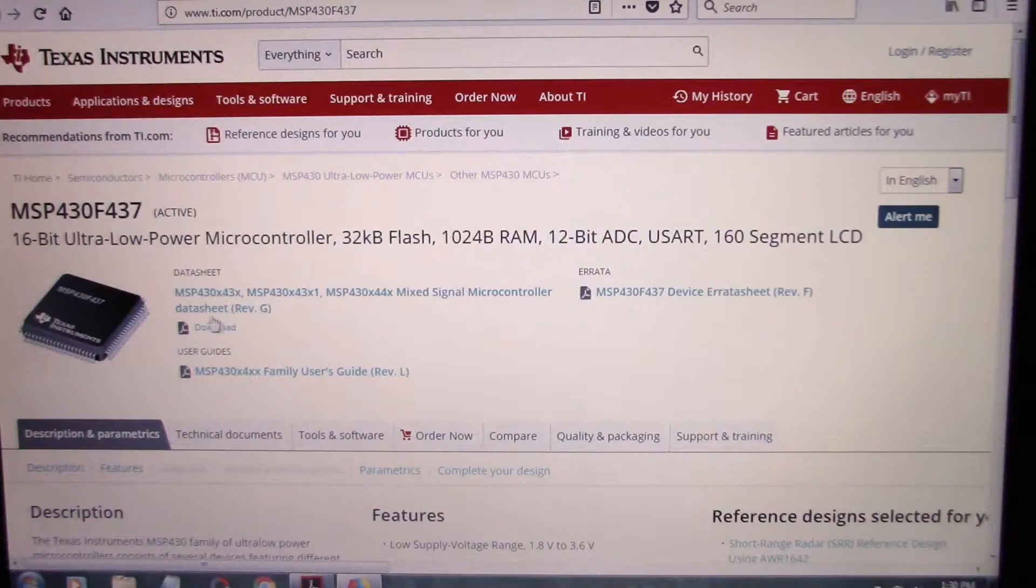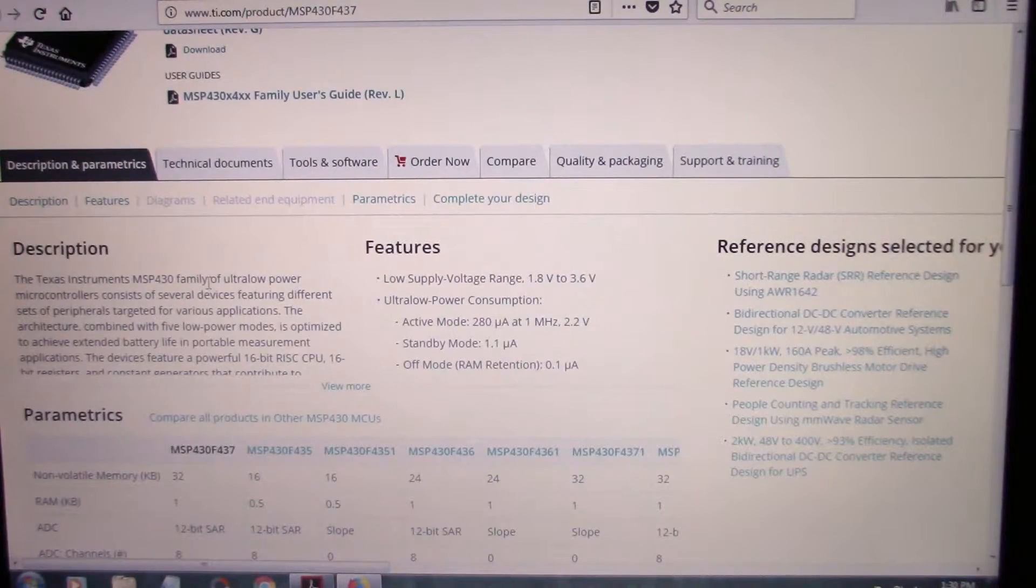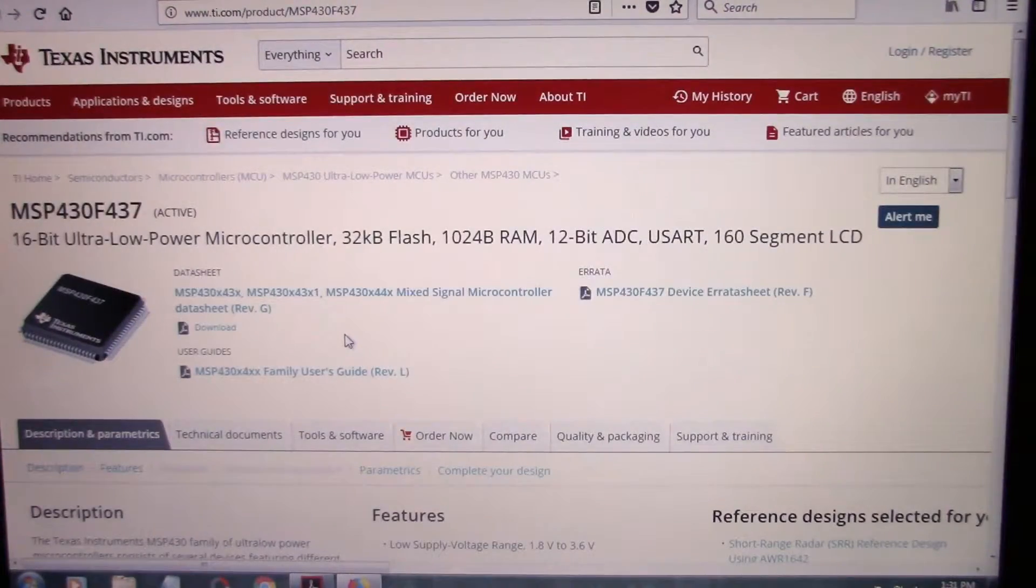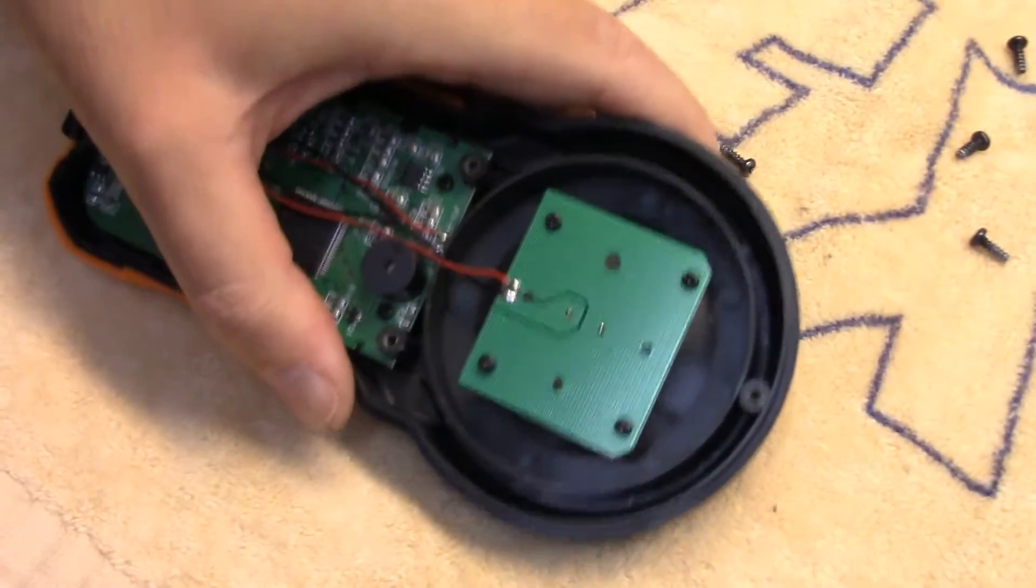Just looking at the product specs here of this 430 F437 microcontroller on Texas Instruments website. I never mentioned when we were looking at it on the board that it's a quad flat pack, so that's a better way to mount them, a little more expensive. As far as the specs go: 16-bit ultra low power microcontroller, 32 kilobyte flash, 1024 RAM, and it looks like it'll support up to a 160 segment LCD. The MSP430 family of ultra low power microcontrollers, the architecture combined with five low power modes is optimized to achieve extended battery life in portable measurement applications, which is exactly what it's being used for. So decent little microcontroller in this thing.